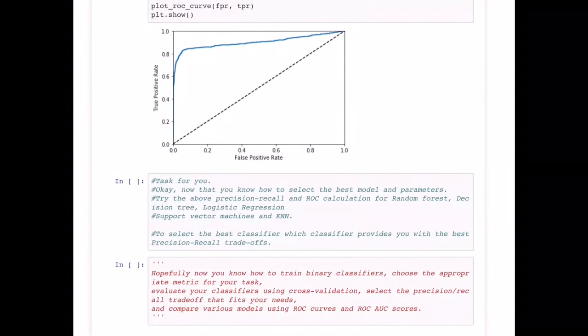Hopefully now you know how to train a binary classifier, choose the metric for your tasks, and evaluate using cross-validation. Select the trade-off numbers that fit your purpose and compare different models using ROC curve. If Gradient Boosting has done better doesn't mean that Random Forest will not do better in another project. This is how we typically decide to use different models. Using the confusion matrix, we come up with different strategies, and at times we might also go back and change our processing of the data.